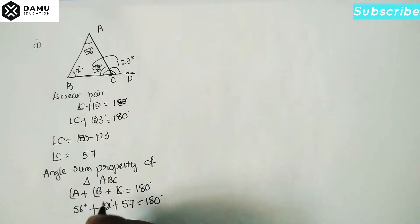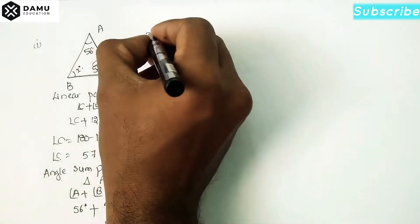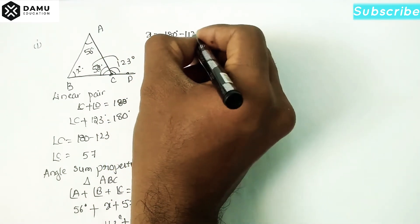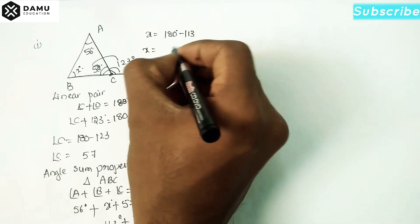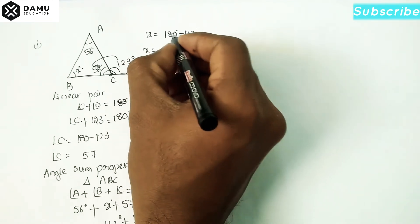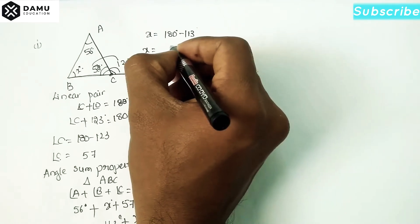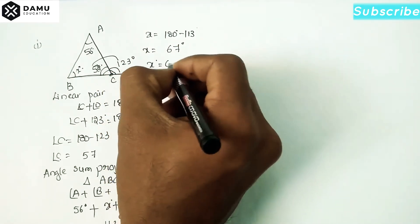So 113 degrees plus x will be equal to 180 degrees. Then x will be equal to 180 minus 113, which gives x equal to 67 degrees.